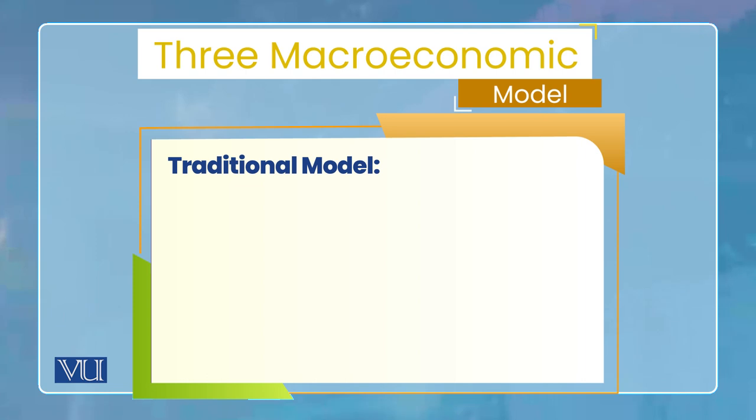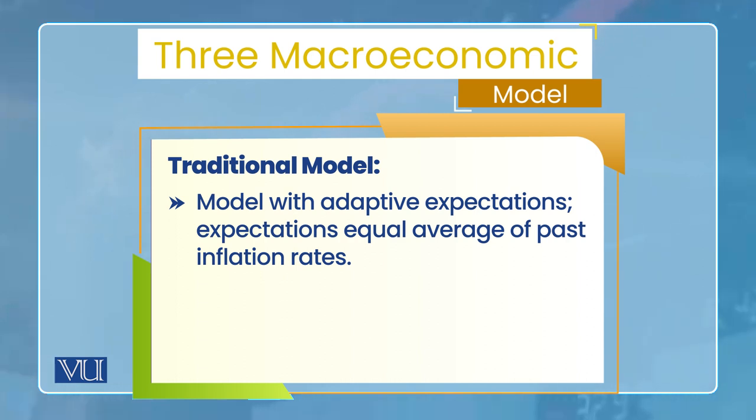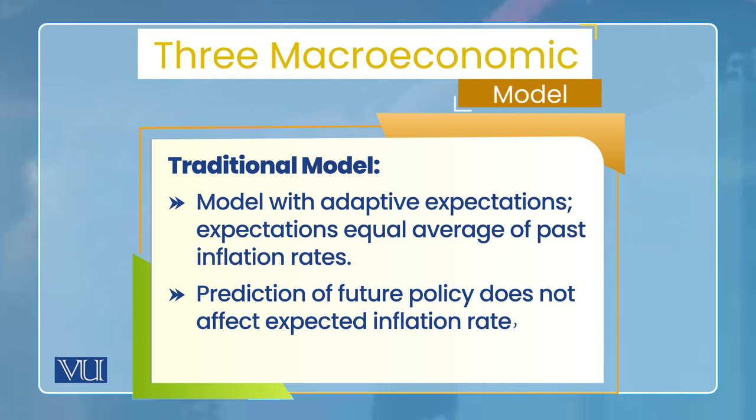First of all, the traditional model — in this model expectations are adaptive, meaning expectations are backward-looking. The average of past inflation rates is taken as the expectation of future inflation. Because of this, if there is a prediction of a future policy change, it will not affect your expected inflation rate, since adaptive expectations are based on past actual inflation rates.